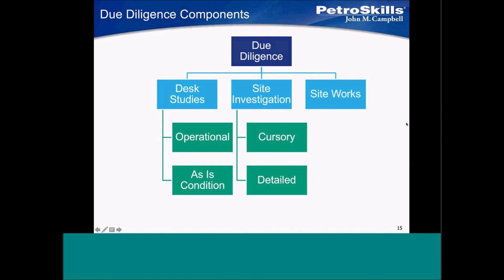Something I want to talk about is that desktop studies — I've broken it up into a couple of categories: operational, which is typically operational conditions, and then as-is condition — in other words, what does that plant look like if you were to go out there? Then site investigation basically confirms — you're trying to validate everything that you found in the desktop studies. We've got two sub-categories: cursory and detailed. And the last one is site works.